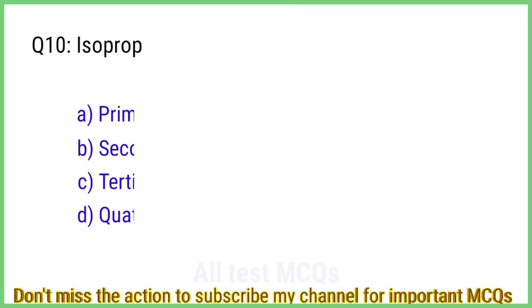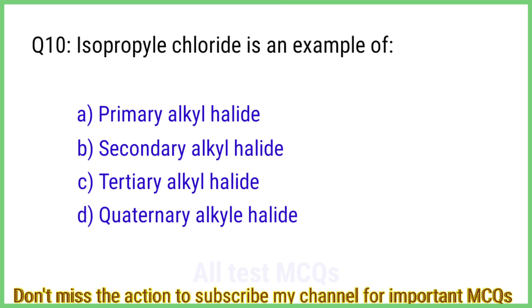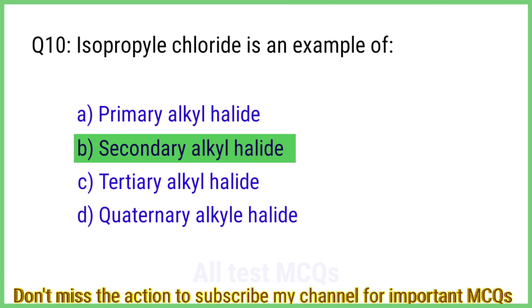Question number 10. Isopropyl chloride is an example of? The right answer is option B: Secondary alkyl halide.